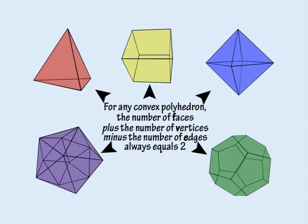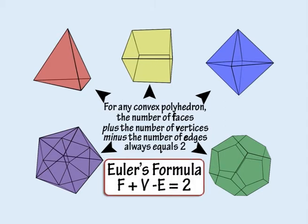The Platonic solids obey Euler's formula, which states that for any convex polyhedron, the number of faces plus the number of vertices minus the number of edges always equals two, or F plus V minus E equals two.